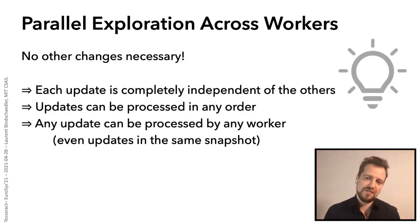So how does this work when we have multiple workers? Well interestingly it works exactly the same way. There's no need to change anything else. We basically get parallel exploration for free and this is because each update and its exploration is completely independent of the others thanks to the techniques that I described before. Now this also means that updates can be processed in any order and that any update can be processed by any worker. In particular, it also means that several workers can process different updates in the same snapshot without having to coordinate.